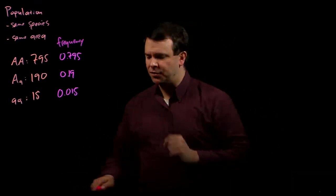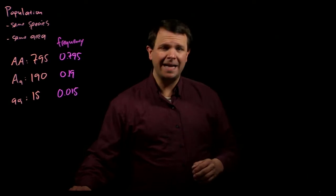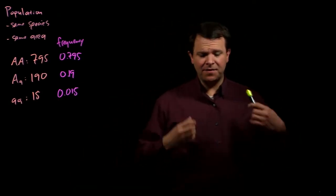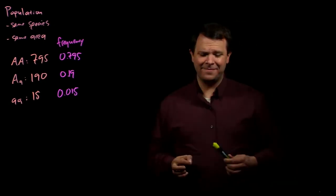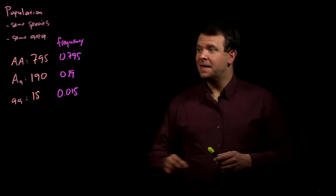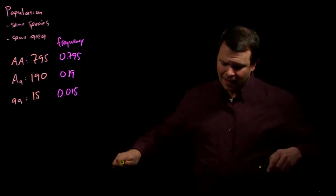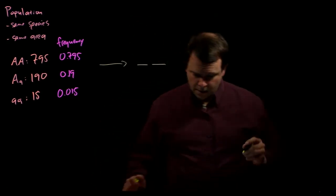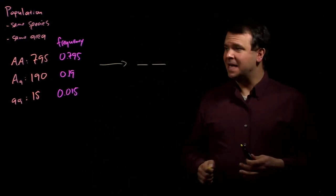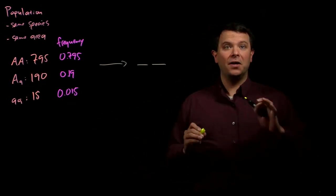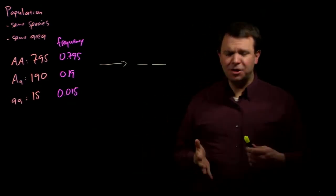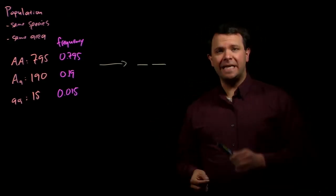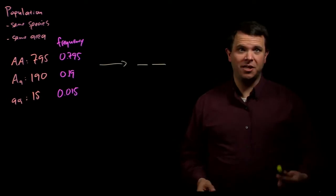If we allow these individuals to mate randomly, what will be the genotype frequencies of the next generation? The word random is key here, because if this mating is random, then a zygote's alleles are chosen randomly from the entire population of alleles. And the transmission has to be analyzed in terms of alleles, not genotypes, because the alleles are what are transmitted, not the genotypes.